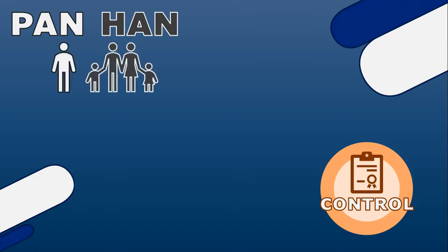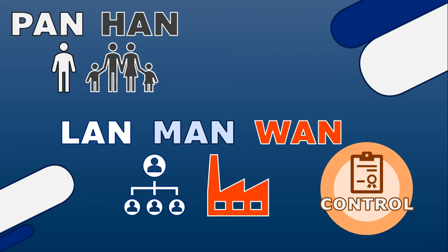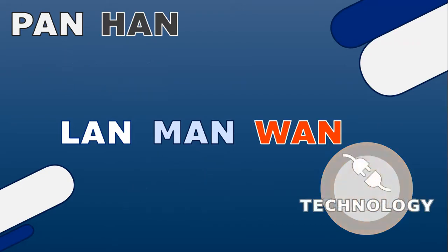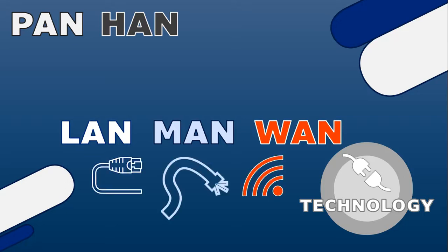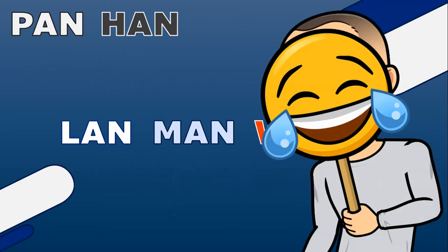When it comes to control, PANs and HANs are typically owned and controlled by individuals or households, while LANs, MANs, and WANs are owned by organizations or service providers. Regarding technology, LANs, MANs, and WANs may use both wired technologies — Ethernet and fiber optic cables — and wireless technologies like Wi-Fi or microwave, whereas PANs and HANs primarily rely on wireless technologies like Bluetooth and Wi-Fi. And that's a wrap on the different types of networks!